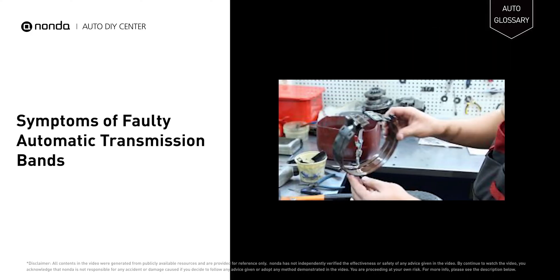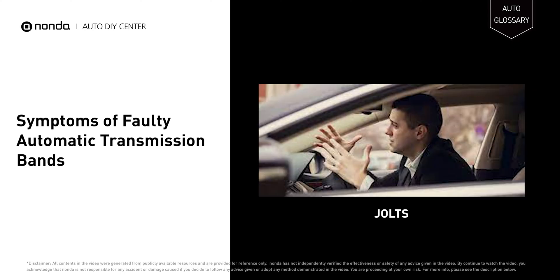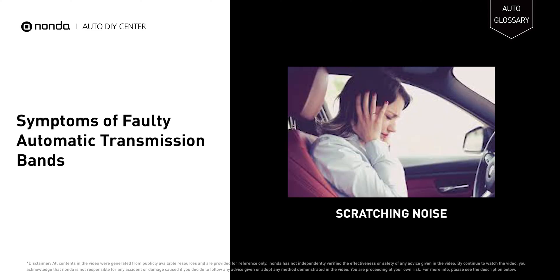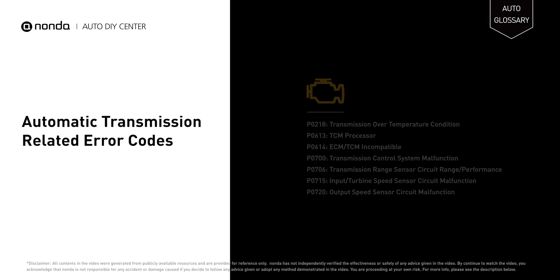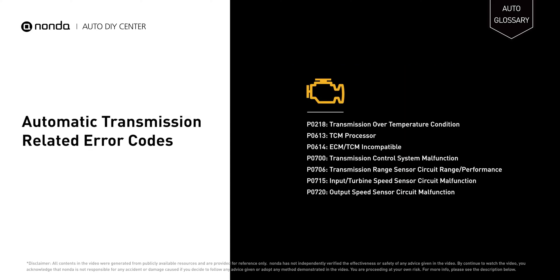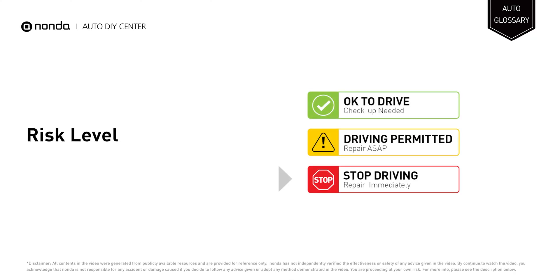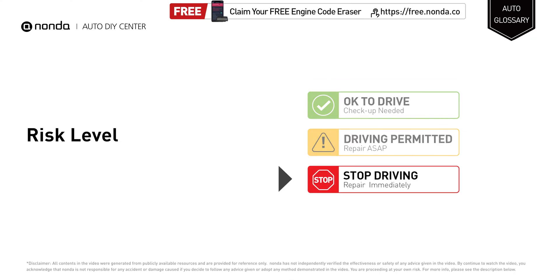Damage or wear of the automatic transmission bands can cause incomplete locking of the planetary mechanism. As a result, during the process of gear shifting, drivers can experience jolts or hear scratching noise in the automatic transmission. It will also turn on the check engine light on your dashboard and store automatic transmission-related error codes.